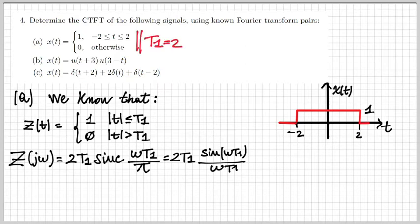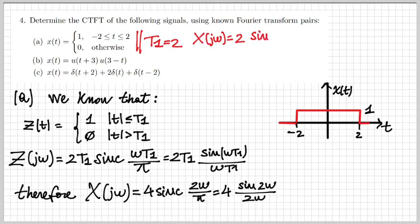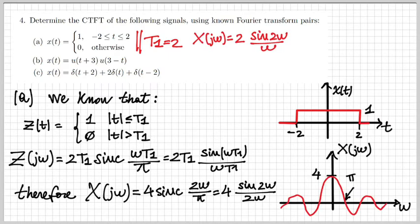Our case is a special case for T1 equal to two, so we conclude that X(jω) is 4 sinc(2ω/π). The peak is at four when ω equals zero, and zeros occur at ω equal to π/2, π, 3π/2, and so on.